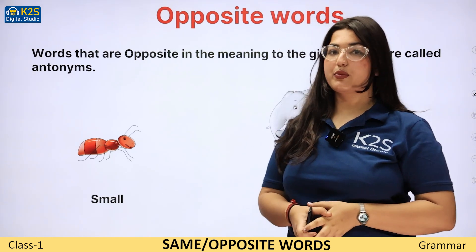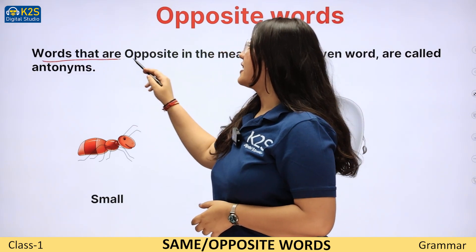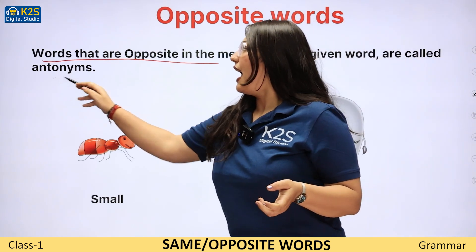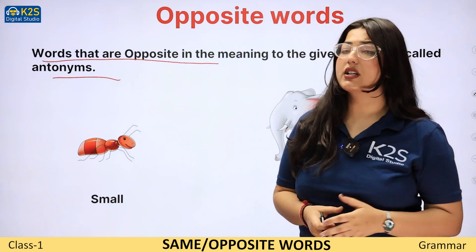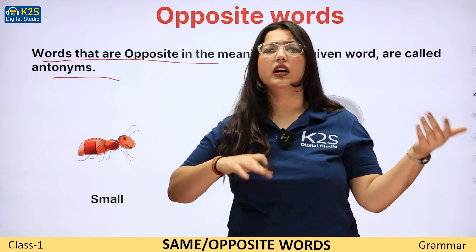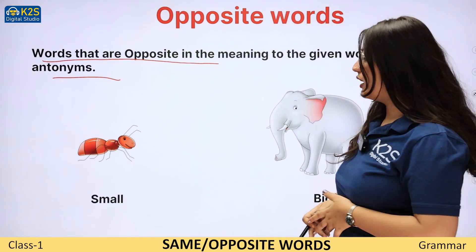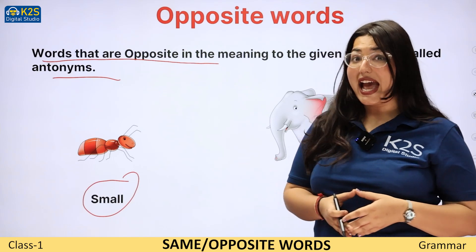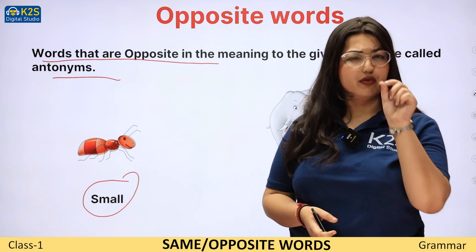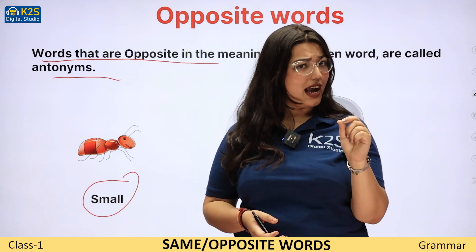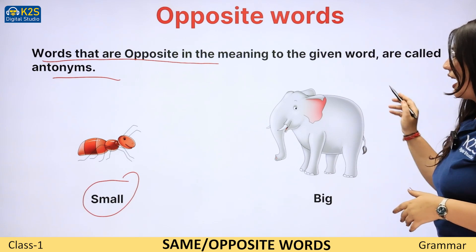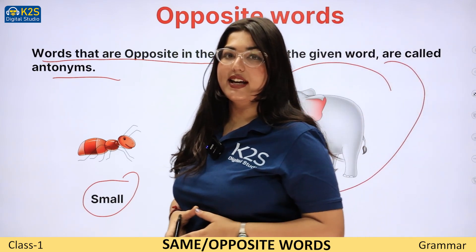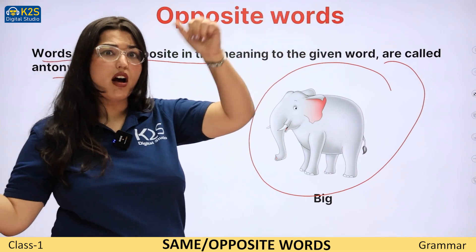Now let's learn about opposite words. Words that are opposite in meaning — unko hum antonyms bolte hain. Jin words ka jo meaning hai, woh bilkul ulta hota hai. Here you can see a small ant — ye ant bahut small in size hai. On the other hand, you can see this elephant, which is very big in size.